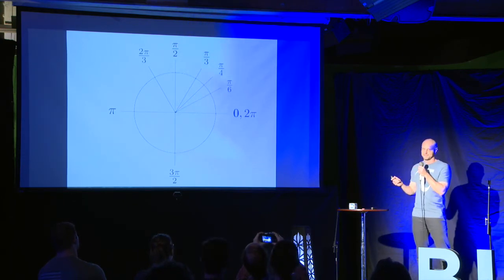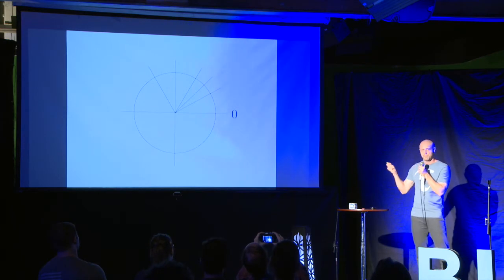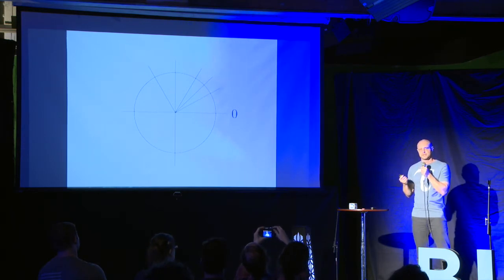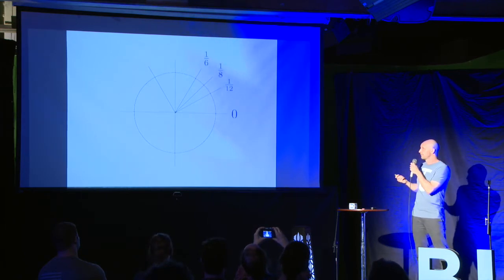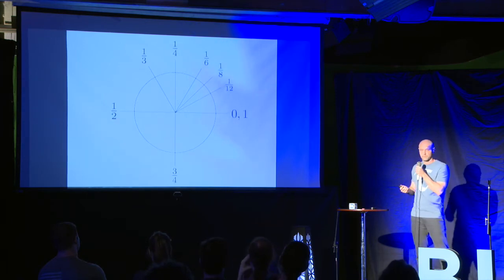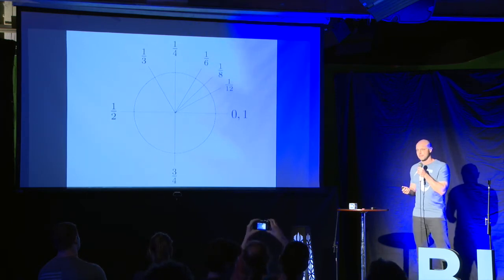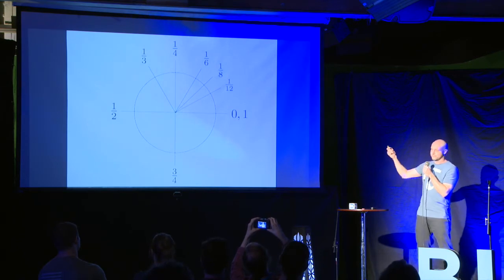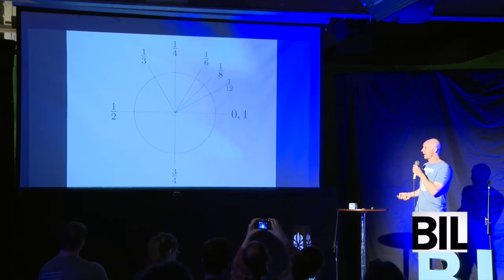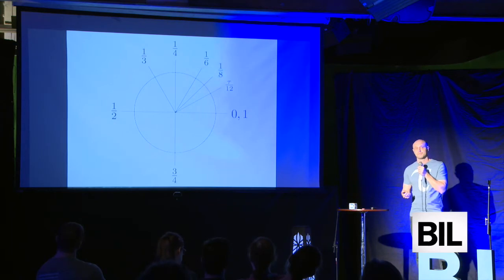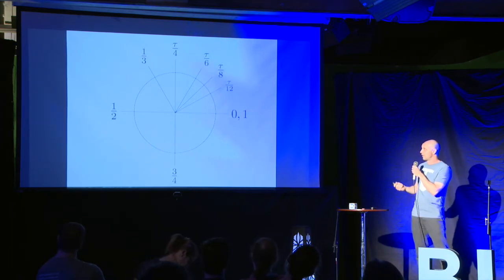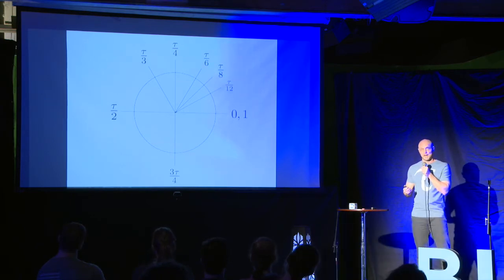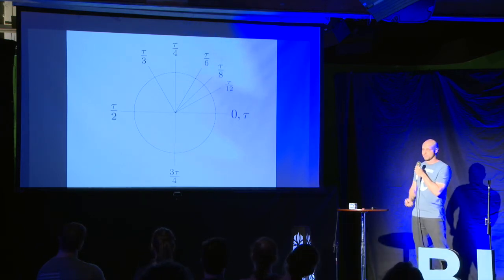Because if we think about what these angles are, they're really just particularly simple fractions of the full circle. This here is just a twelfth, this is an eighth, a sixth, a fourth, a third, a half, three fourths, and then all the way around back to 1. If we write these angles as radians in terms of tau, what we get is tau over 12, tau over 8, tau over 6, and so on around the rest of the circle, finally arriving back at 1 turn equals 1 tau.